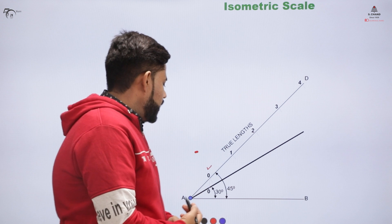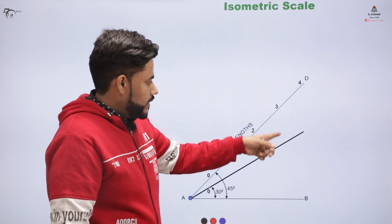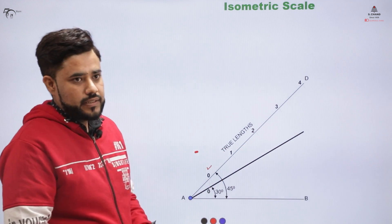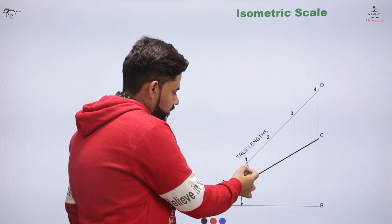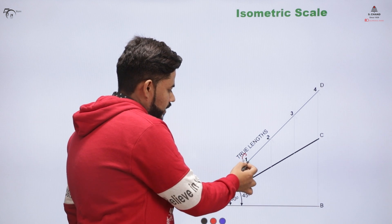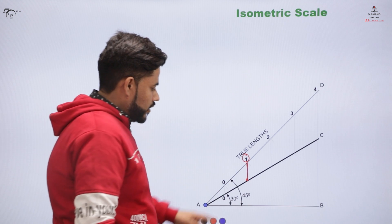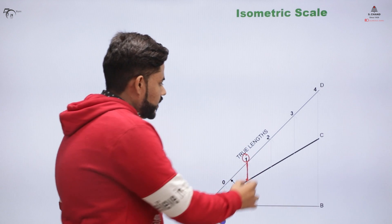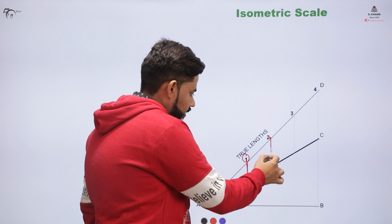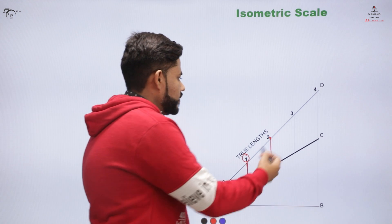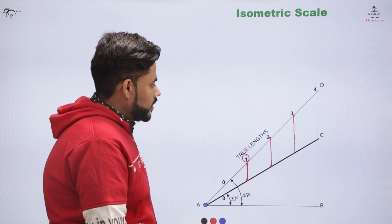Now I need to project these points on the isometric dimension or on the isometric scale that I will be generating. For that, you will draw perpendiculars from these points. From point number 1, you will draw a perpendicular so that it falls on the isometric length. Similarly, from point number 2, you draw a perpendicular on this isometric surface, and similarly for the next points, you draw the perpendicular on the isometric dimension.